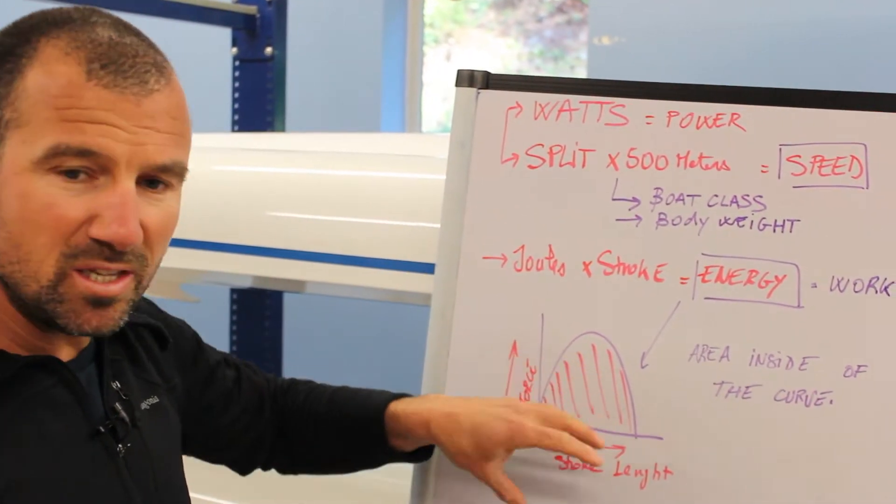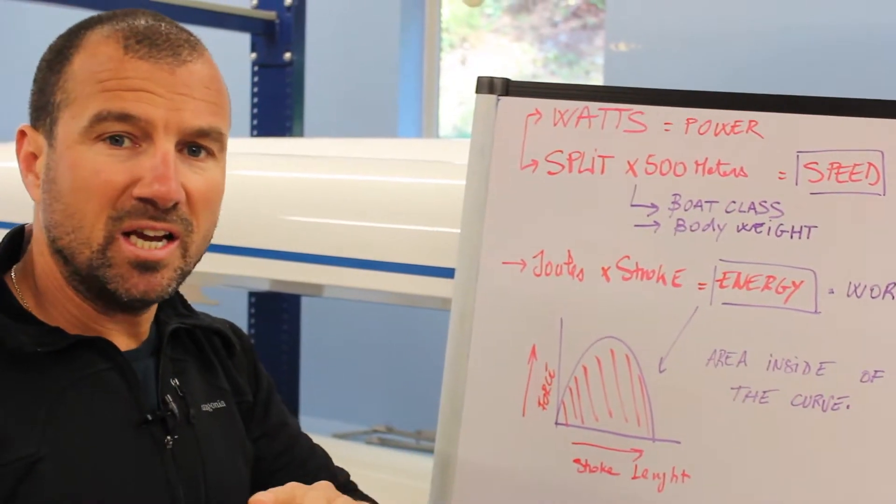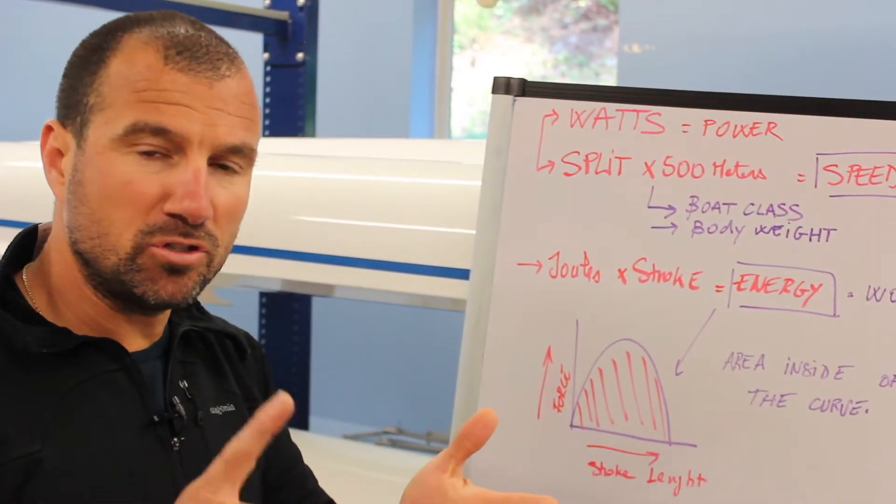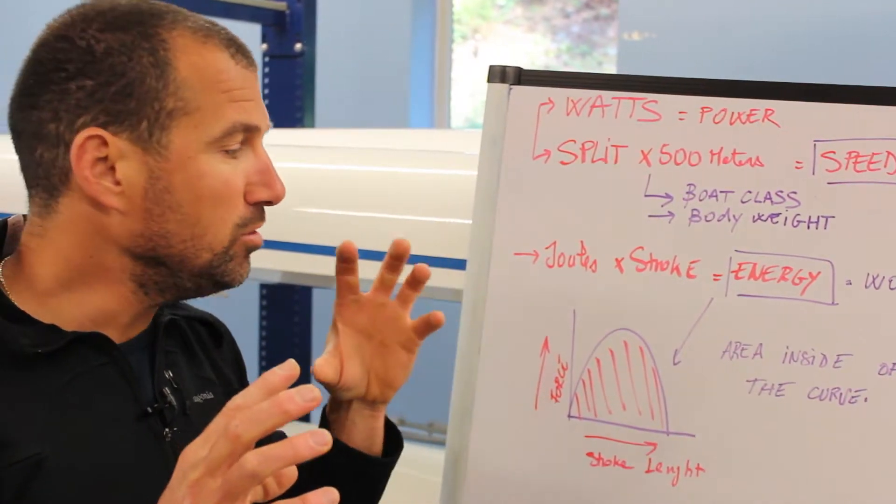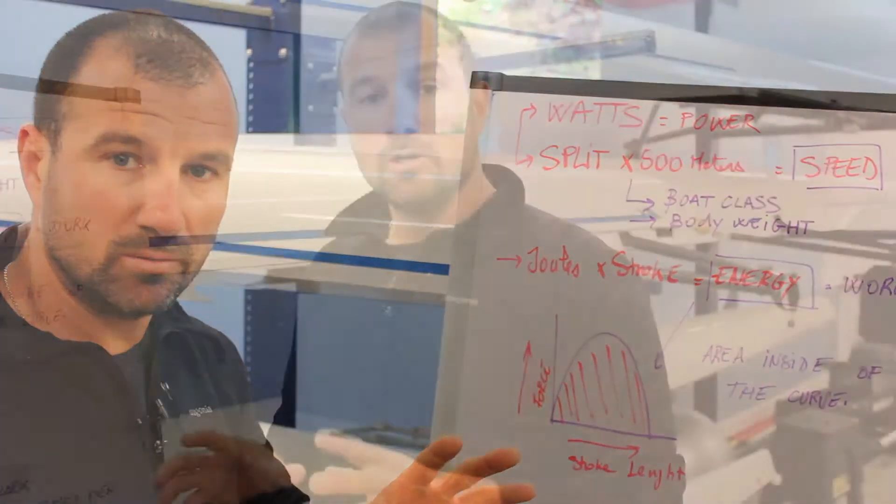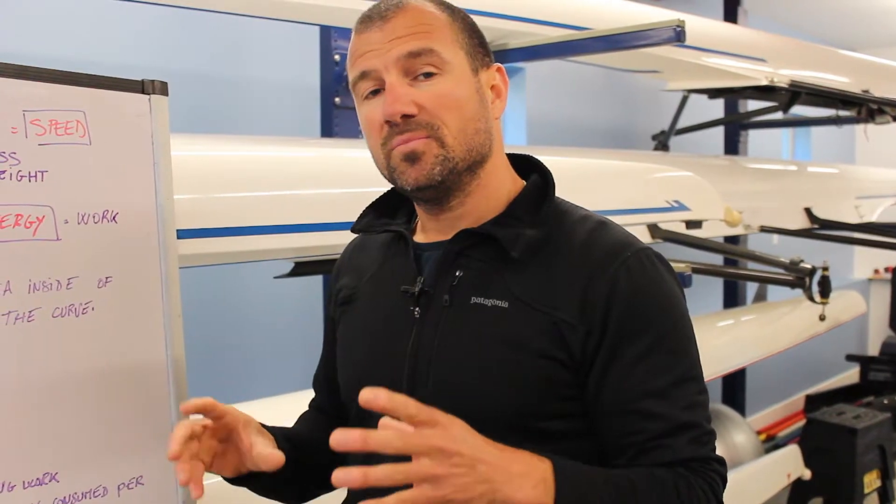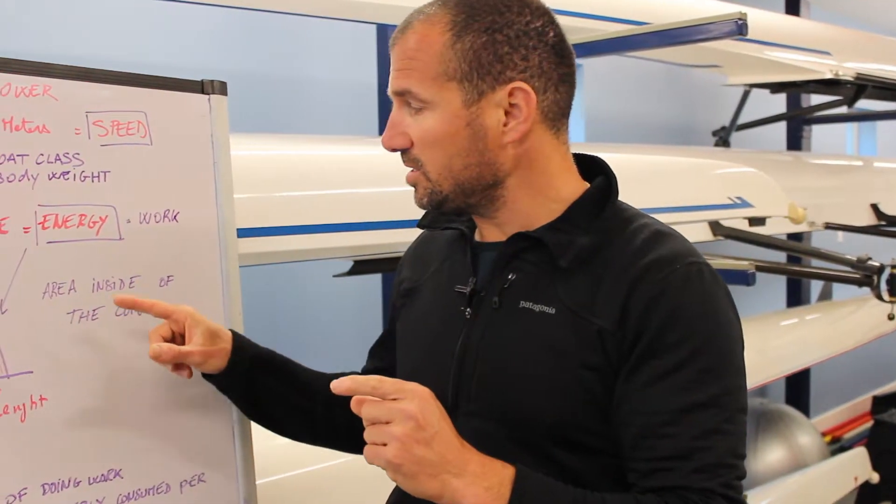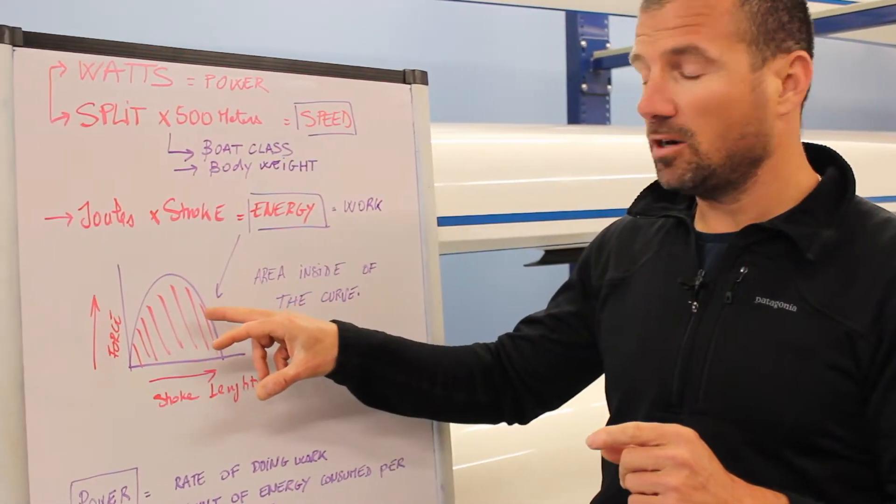This is that stroke. It has nothing to do with time or stroke rate. It is just that number of that single stroke. So when we have clear that one single stroke has an amount of work and a number of joules, now we come to what's power or split.